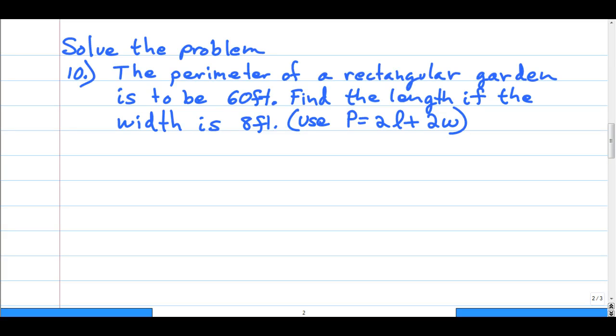Question 10 says the perimeter of a rectangular garden is to be 60 feet. Find the length if the width is 8 feet.